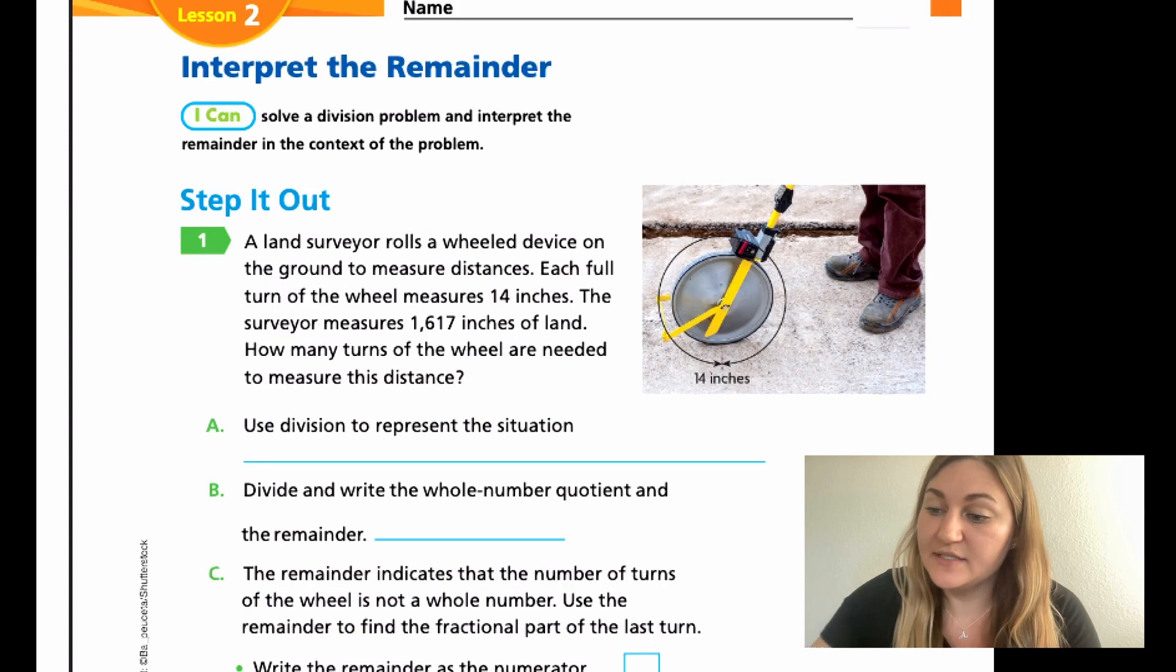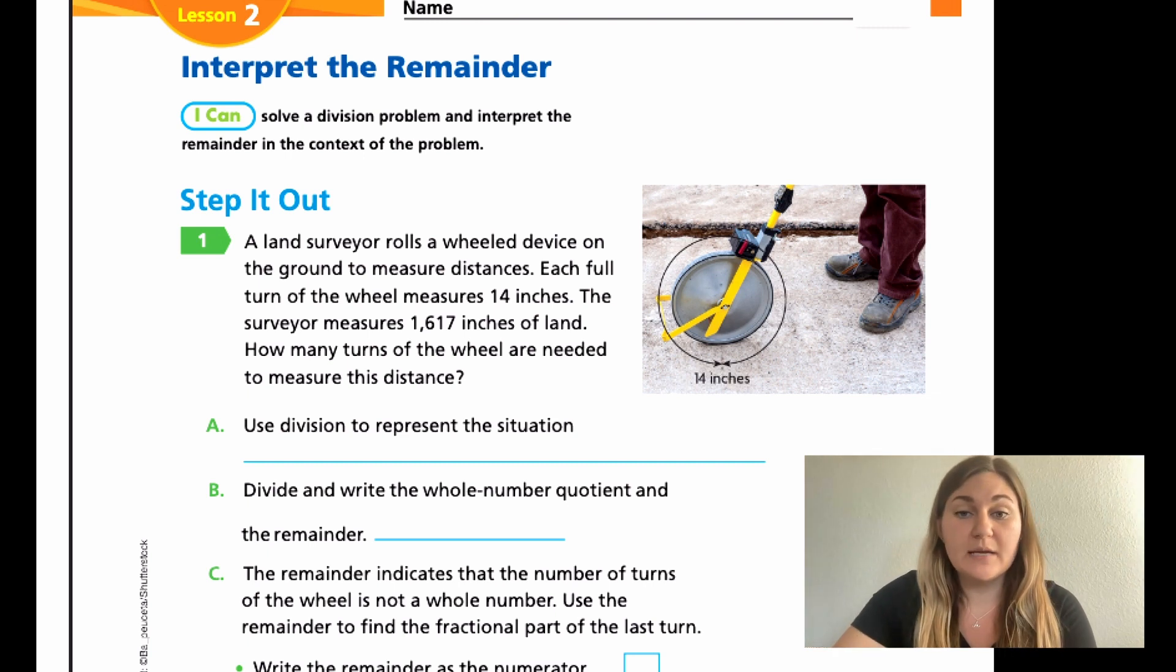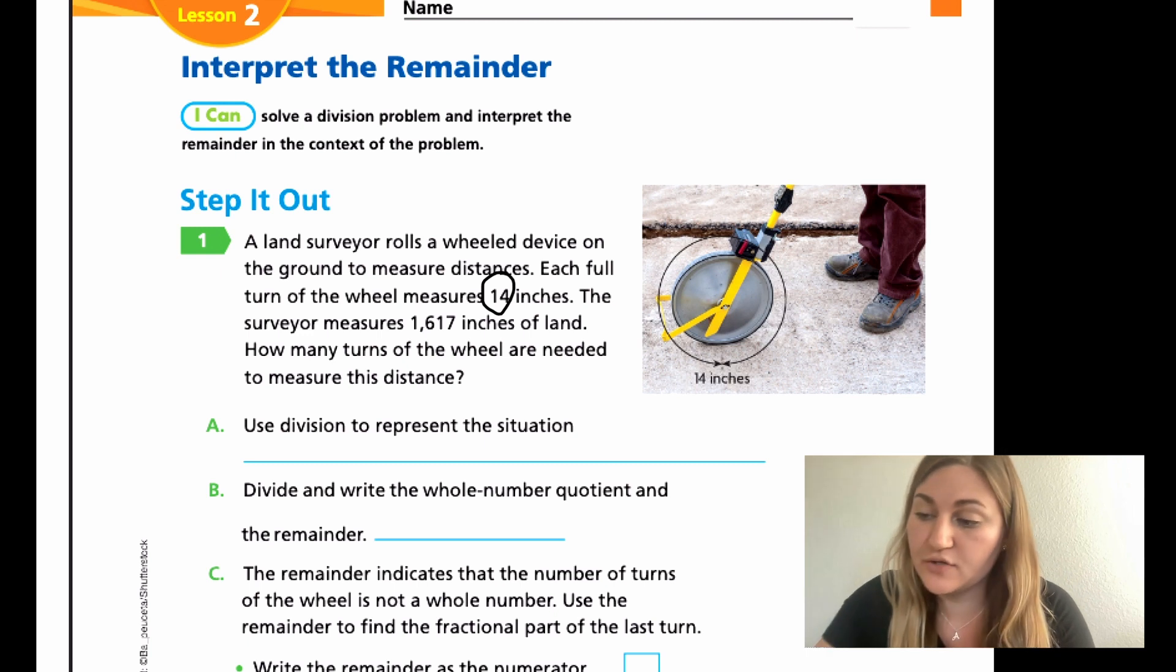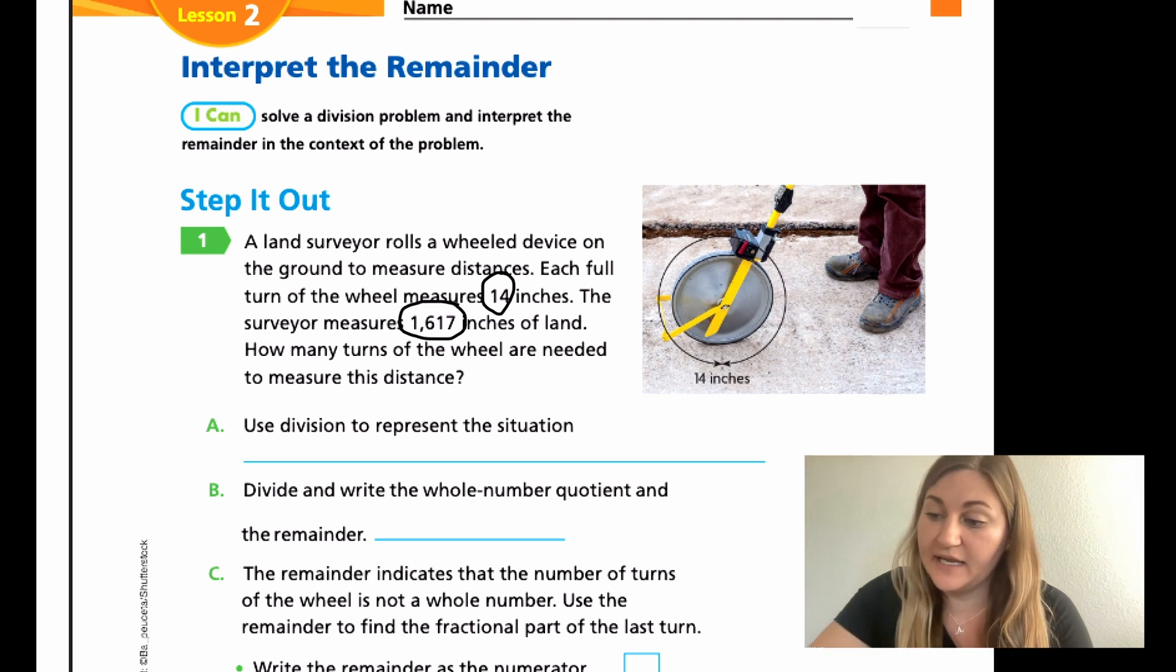Now, moving into Lesson 2, Step It Out, question number one. A land surveyor rolls a wheeled device on the ground to measure distances. Each full turn of the wheel measures 14 inches. The surveyor measures 1,617 inches of land. How many turns of the wheel are needed to measure this distance? We're going to read it one more time and highlight out the numbers.